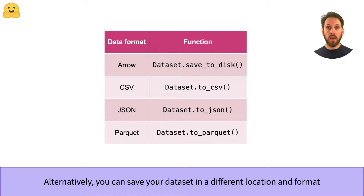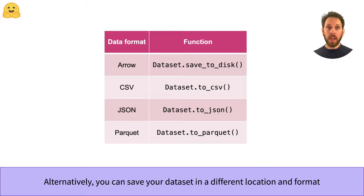But if your dataset is huge, you'll want to save it in either the Arrow or Parquet formats. Arrow files are great if you plan to reload or process the data in the near future, while Parquet files are designed for long-term storage and are very space efficient.